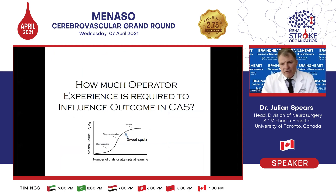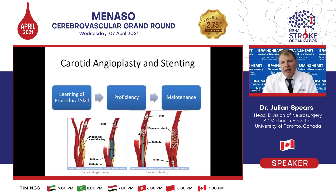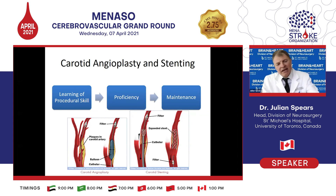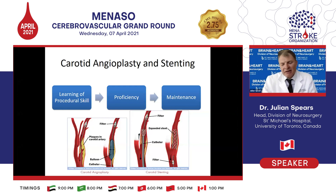How much operator experience is required to influence the outcome? The question is where is the sweet spot at which the complication rate plateaus. I always tell our trainees: I'm much less concerned about how you do it than how much you do it, because that correlates into excellent outcomes. If you do 100 endarterectomies a year, you're likely to have outstanding results; similarly for 100 stents a year — but doing small volumes in either direction has a very profound negative effect.